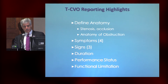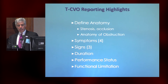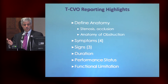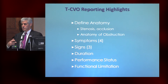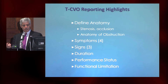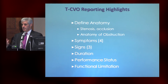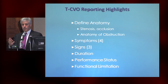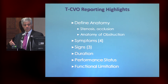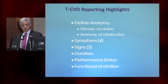To summarize, thoracic central vein obstruction reporting highlights: one, define the anatomy — stenosis or occlusion — and report the flow, whether venous or arteriovenous fistula type. Report the anatomy of the obstruction using those obstruction maps. Second, report within the four categories of symptoms, the three signs, the duration, performance status, and functional limitations.